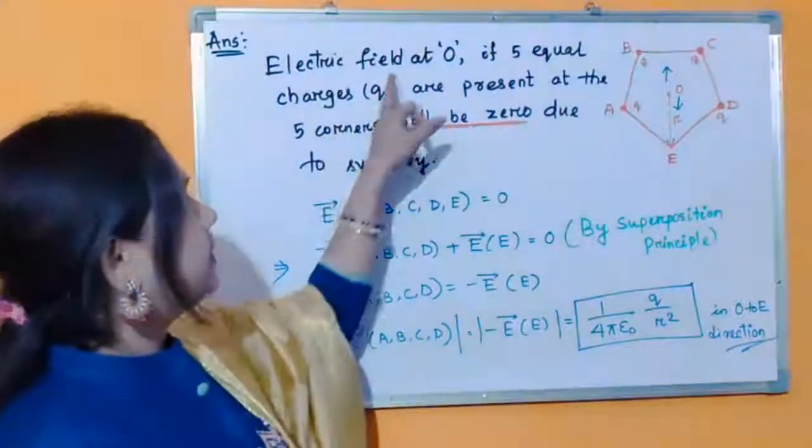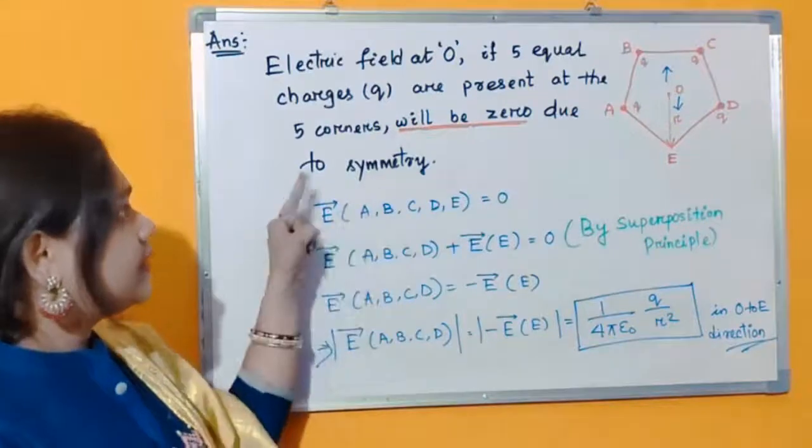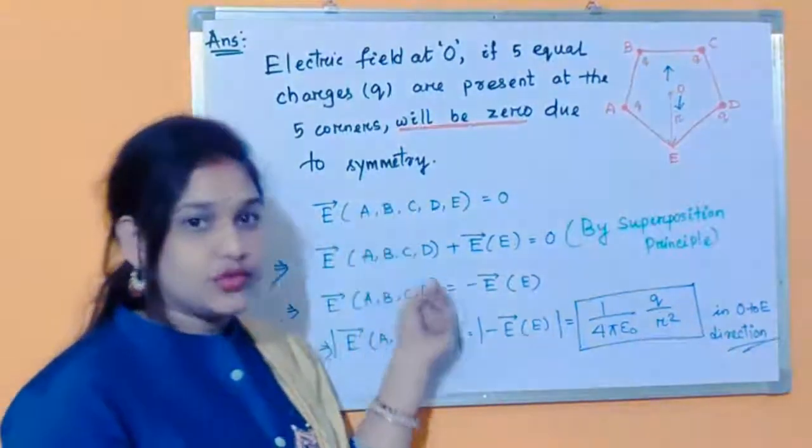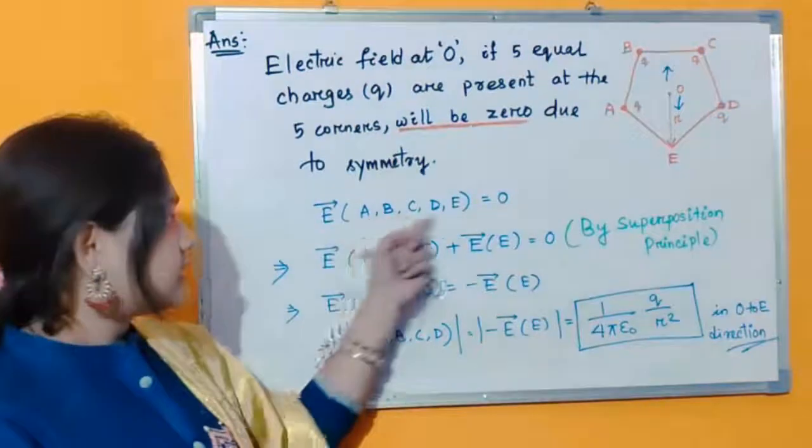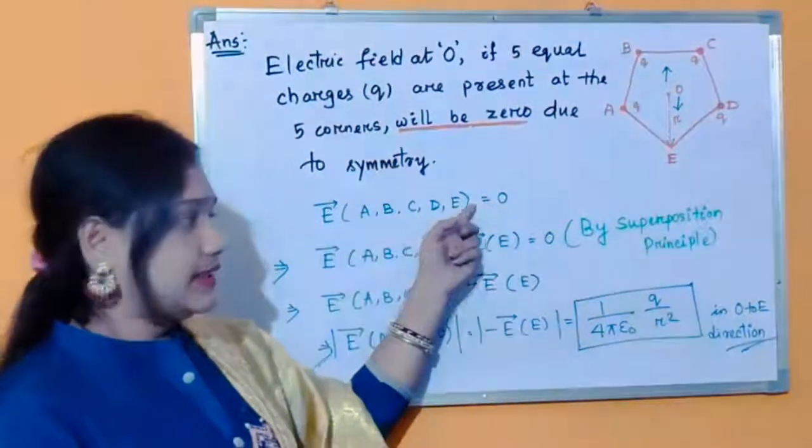So see, electric field at O if the five equal charges Q are placed at the five corners will be zero due to symmetry as I have told you. So this is electric field due to A, B, C, D, E is zero.